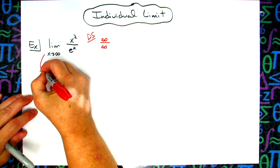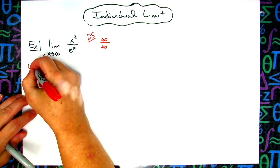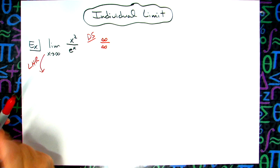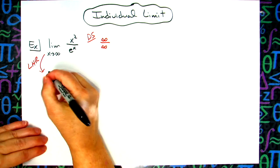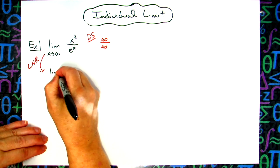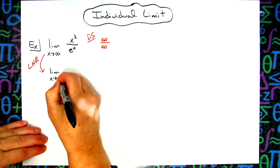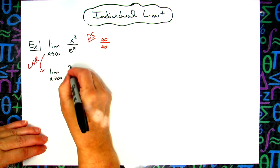So I'm going to apply L'Hopital's rule, which means taking the derivative of the top and bottom. The limit as x approaches infinity - taking the derivative of the top, we have 2x.